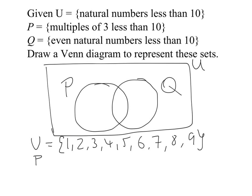The next thing we'll write down is what is represented by the set P. So P is multiples of 3 that are less than 10. So that's going to be 3, 6, and 9.